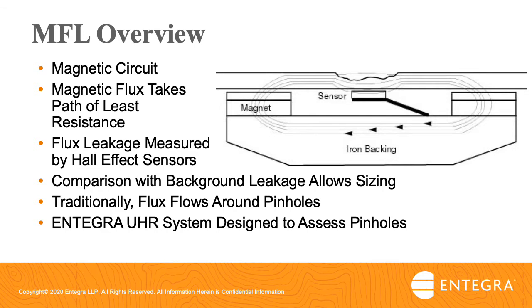Magnets placed with opposing poles on either end of an iron backing bar and connected to a piece of steel creates a magnetic circuit. This circuit causes magnetism to flow in the piece of steel from one magnetic pole to the other. This flow is called magnetic flux. The magnetic flux will always take the path of least resistance, with some of the flux flowing in the piece of steel, some flowing outside the far surface, and some flowing inside the near surface. The flux that flows outside of the piece of steel is called the flux leakage. In the presence of metal loss — for example, corrosion — the cross-sectional area of the steel is reduced, causing more flux to leak. By comparing the increased leakage to the background values, the volume of missing metal can be estimated.